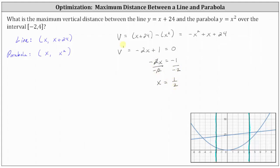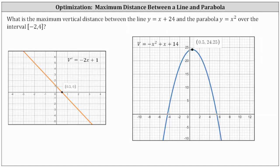x equals one half should be the location where the vertical distance is maximized. We know we have a parabola that opens down, so this will be the x coordinate of the vertex. Using calculus techniques, we verify that at x equals one half the function v changes from increasing to decreasing. On the graph of v prime, the derivative equals 0 at x equals one half, and changes from positive to negative, verifying we have an absolute maximum at x equals one half.